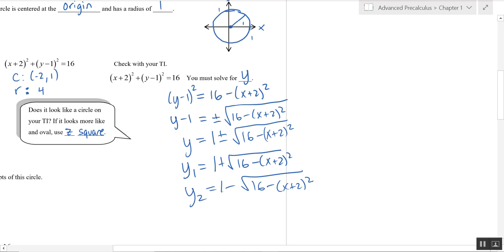When you enter this into a calculator, the one plus is going to give you the top half of the circle, and the one minus is going to give you the bottom half of the circle. This is really good to know for calculus, especially when you get into calculating area and of known cross sections.